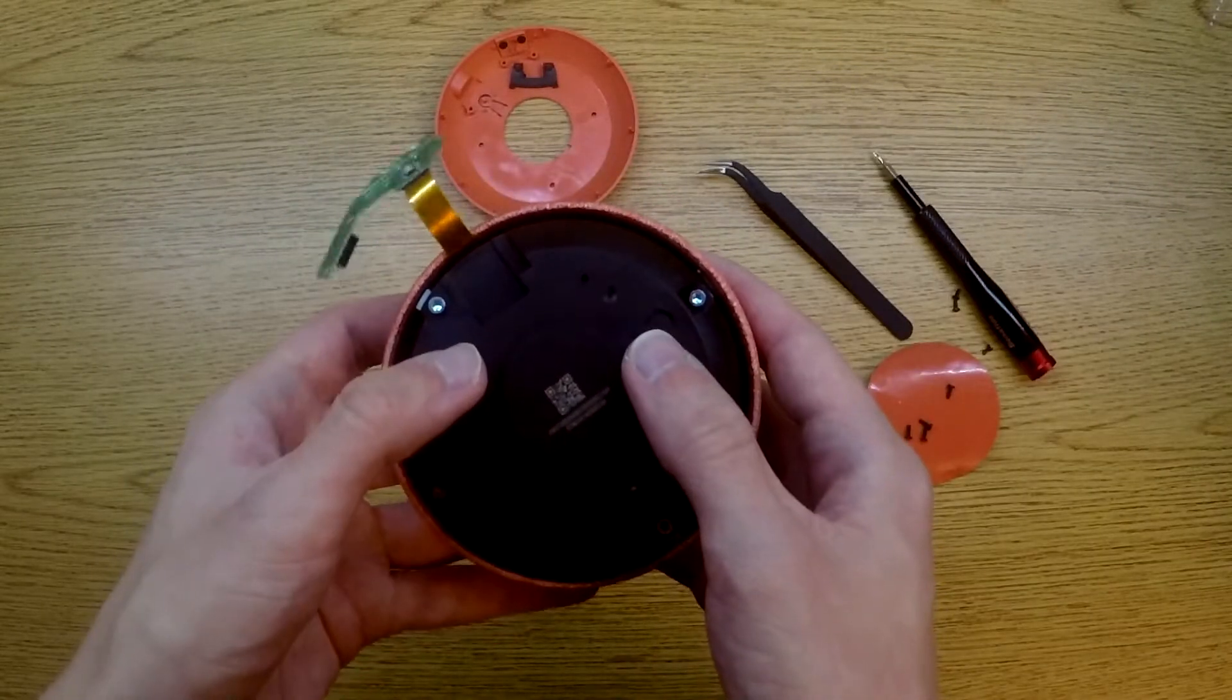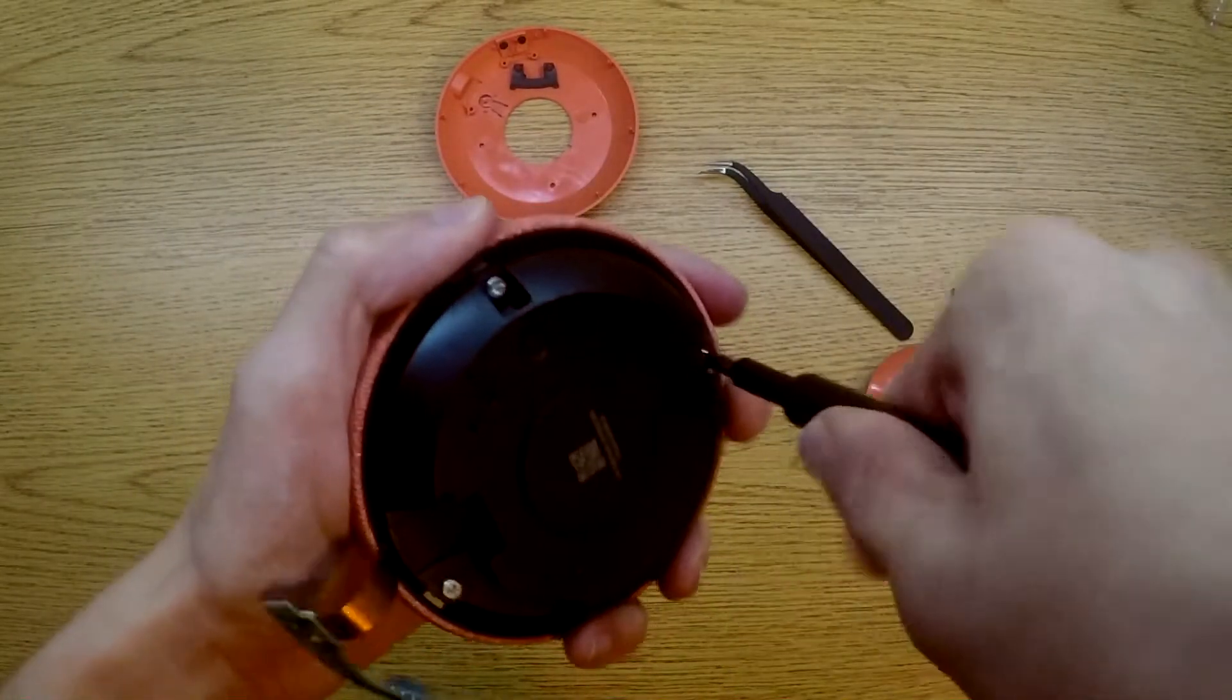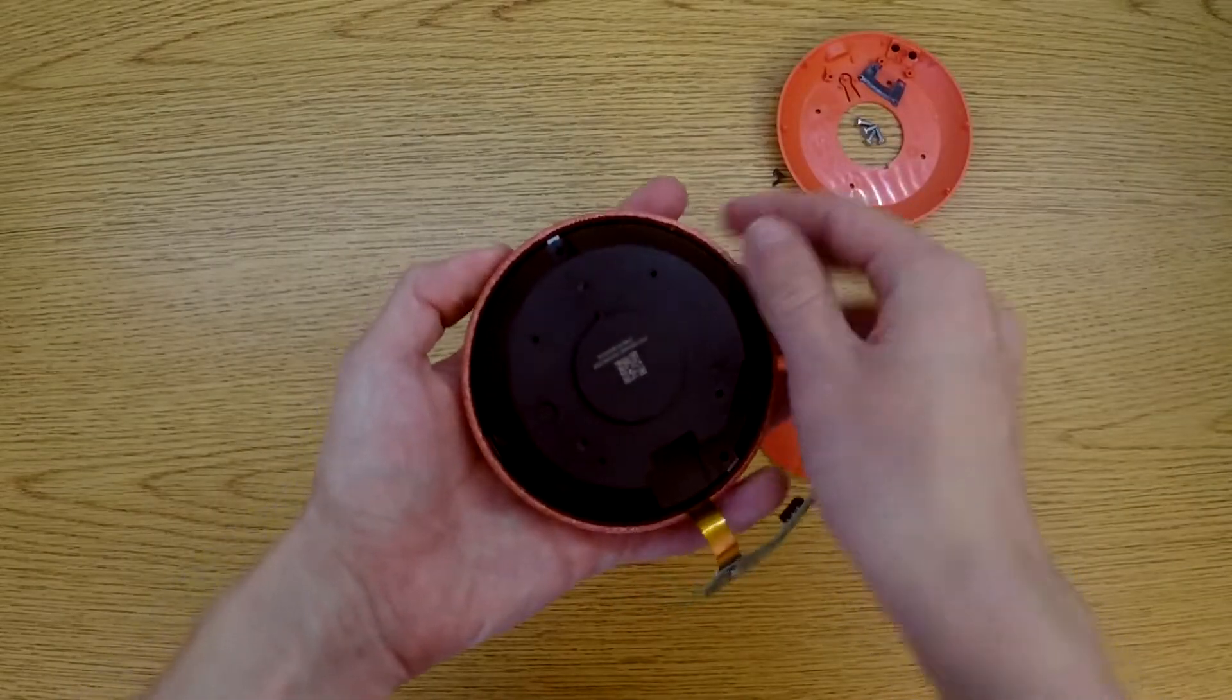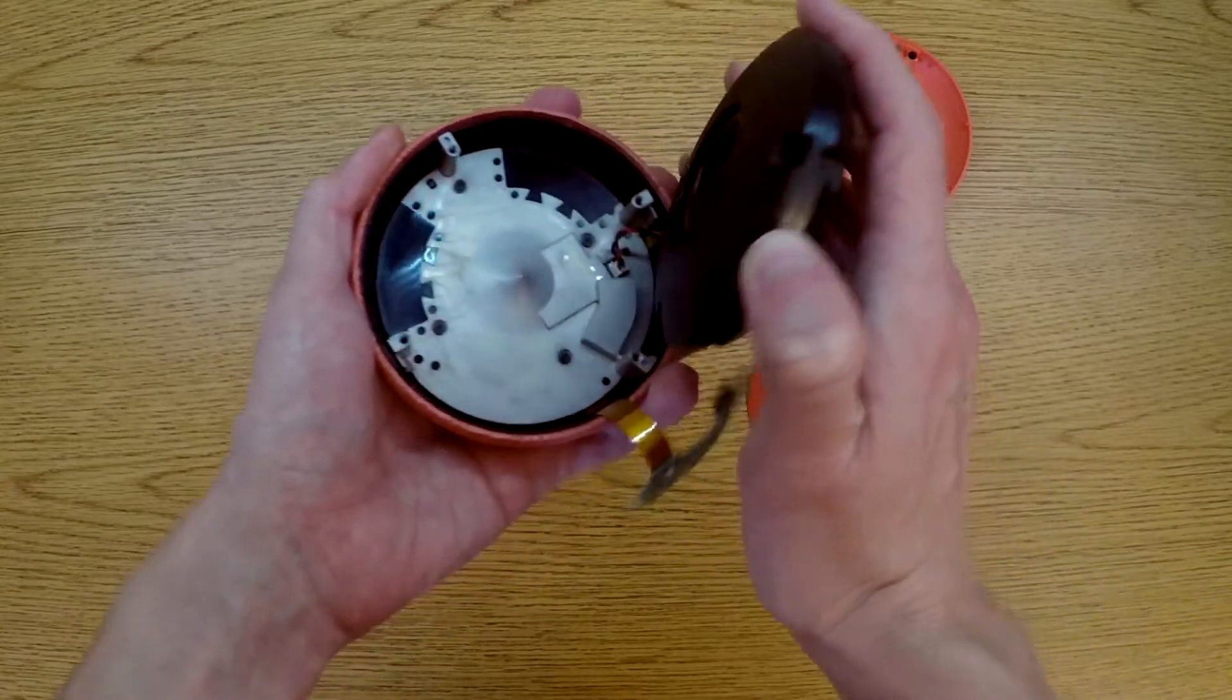This next layer has four Torx 8 screws that need to be removed. So once you get those screws out, this can just lift up just like that.